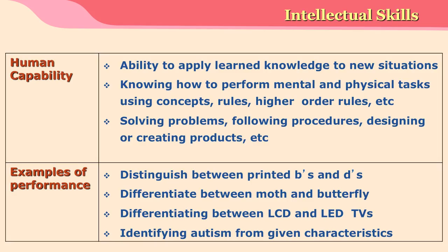The second category is intellectual skills. The capability which demonstrates intellectual skills is the ability to apply learned knowledge in new situations, knowing how to perform mental and physical tasks using concepts, rules, or higher order rules. Solving problems, following procedures, and designing or creating products are all demonstrations of acquiring intellectual skills.